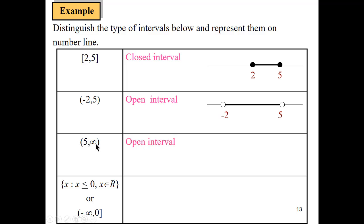If we have 5 until infinity open interval, 5 to the right, that means it's to the positive numbers until infinity.